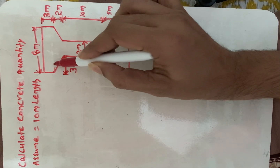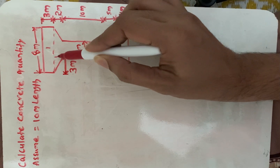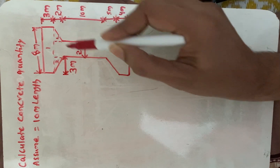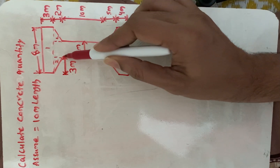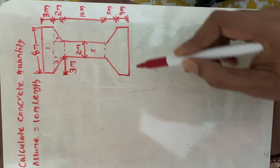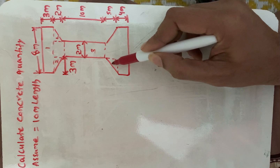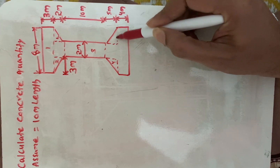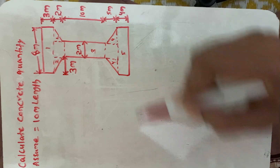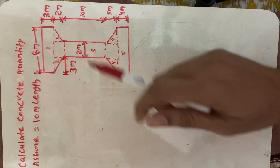I am considering this as section 1, this as section 2 — these two parts are section 2. I am considering this portion as section 3, this portion as section 4, and this as section 5. So there are 5 sections in total.